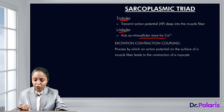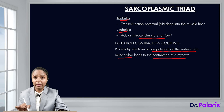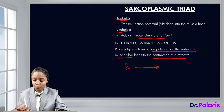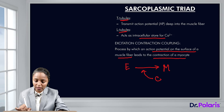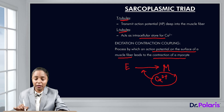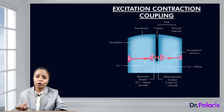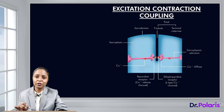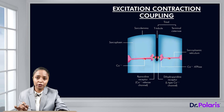Excitation-contraction coupling is the process by which an action potential on the surface of a muscle fiber leads to the contraction of a myocyte. Electrical energy is being converted into mechanical energy, and in between, calcium ion is released. Calcium is the coupler for excitation-contraction coupling, and T-tubules and L-tubules form the anatomical basis of this coupling.